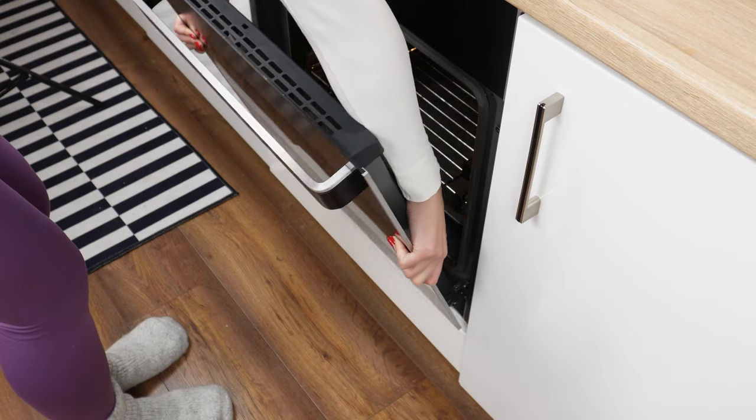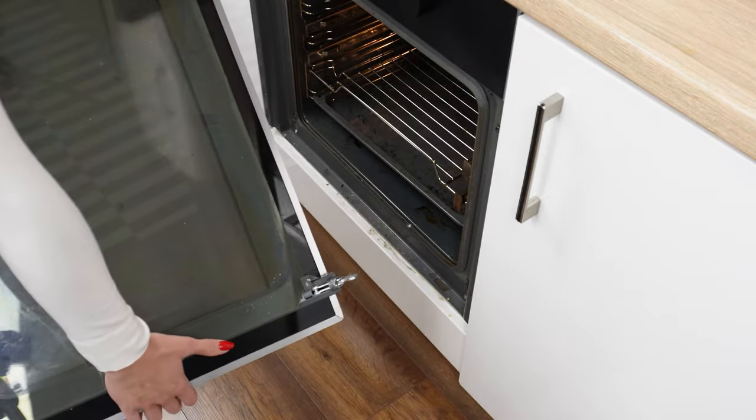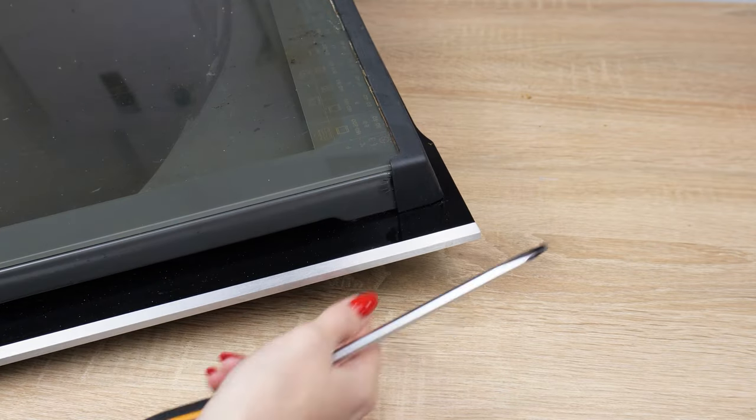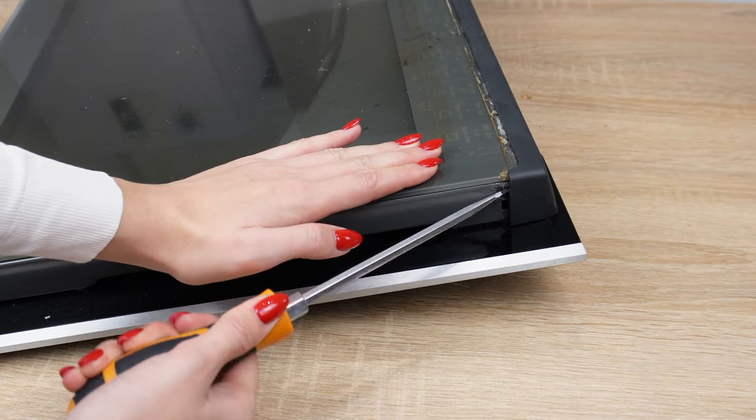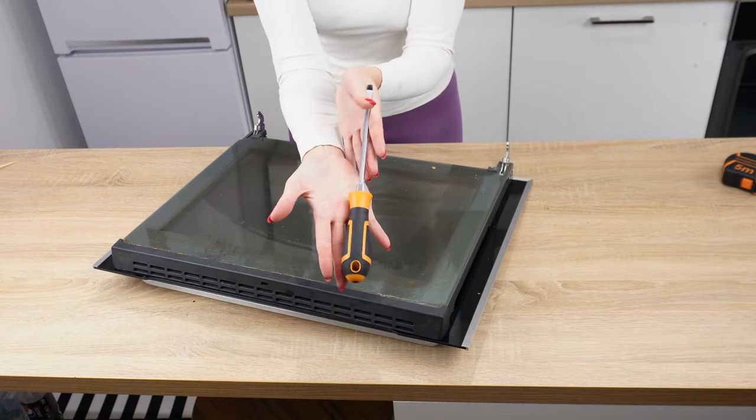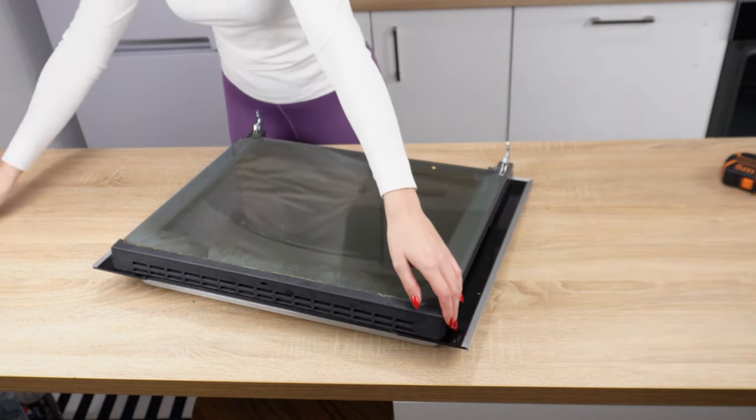Next, grab them and lift them slightly. The hinges should come out on their own. There is a protective plastic on the oven door. Use a screwdriver to pry it open and then remove it. This way, you'll be able to disassemble and clean the glass.